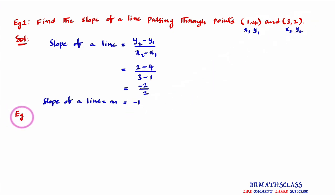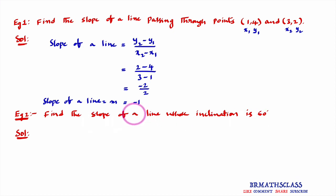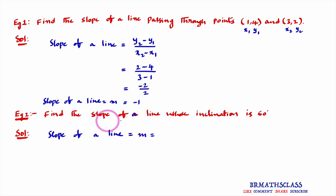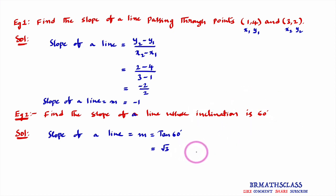We have learned two formulas to find the slope of a straight line. Example 2: find the slope of a straight line whose inclination is 60 degrees. Slope m equals tan 60 degrees. From the trigonometry table, tan 60 degrees equals root 3. So the slope of a straight line whose inclination is 60 degrees is root 3.